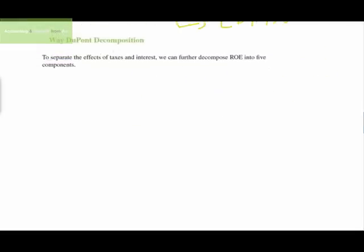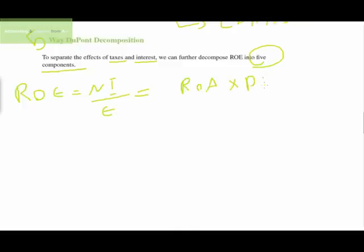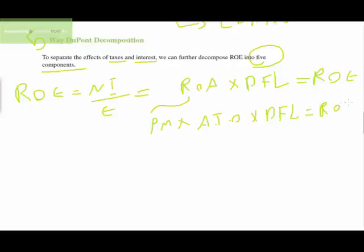Now let's move to the five-way decomposition. To separate the effects of taxes and interest, we further decompose return on equity into five components. Starting from ROE = ROA × financial leverage, and ROA = profit margin × asset turnover, we now break down profit margin into three separate ratios using the income statement structure.